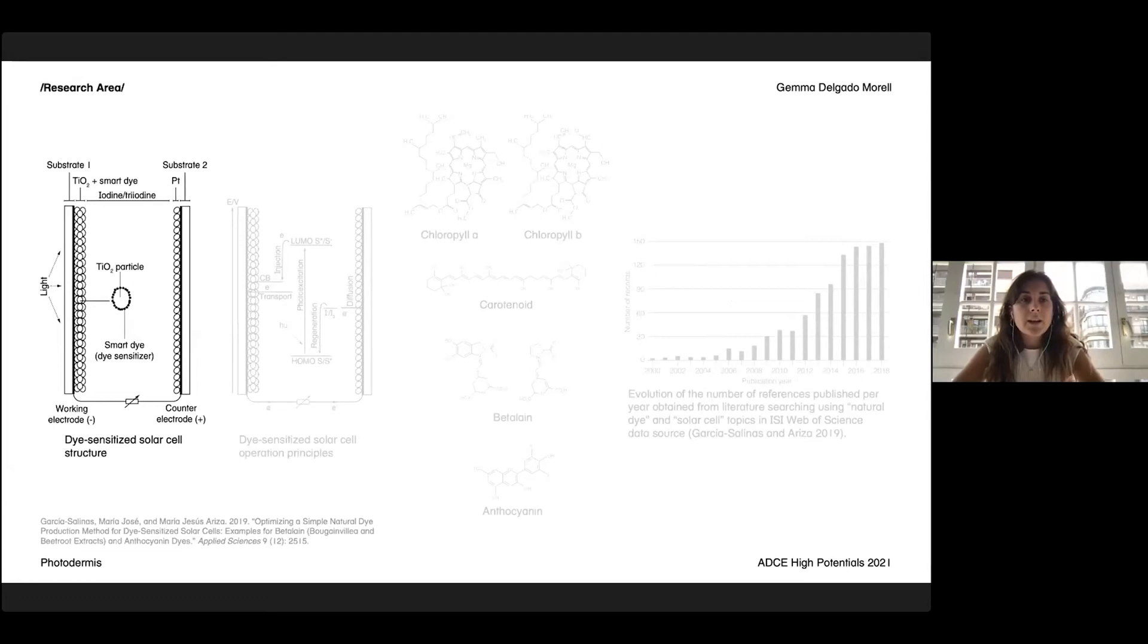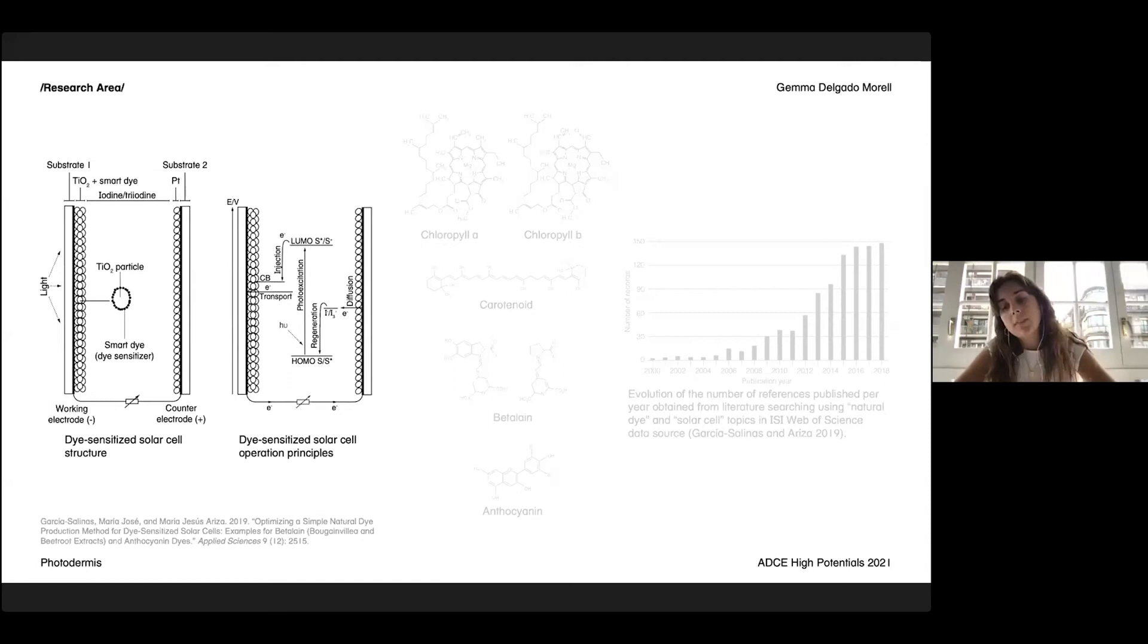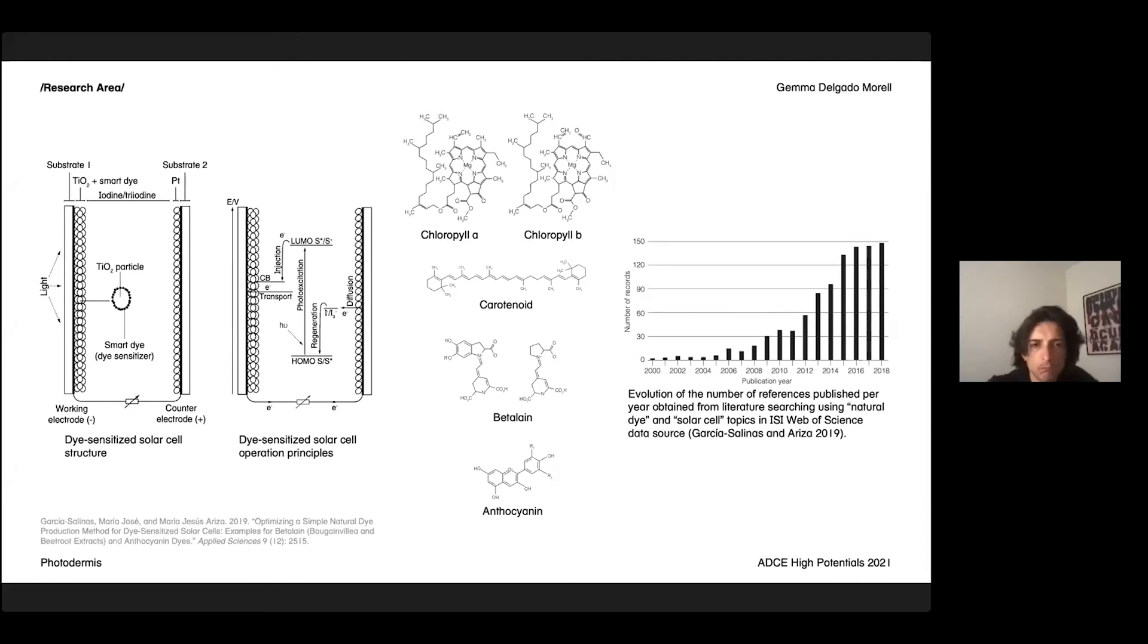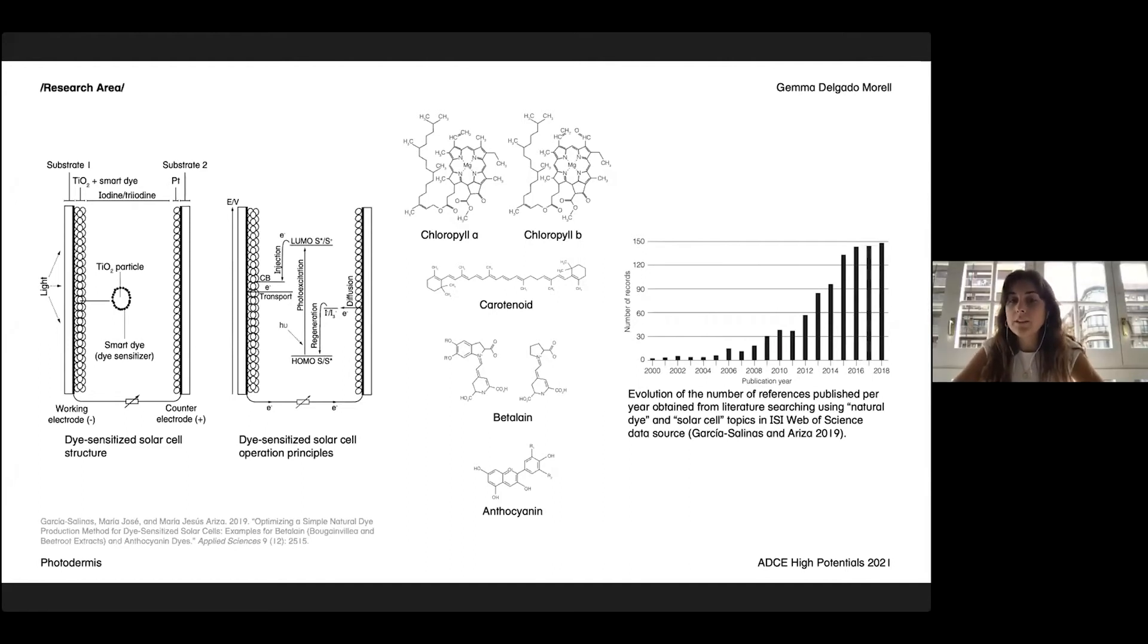I'm going to explain the process of the development of the project. It started with theoretical research about understanding these smart dyes, which are normally used in a type of solar cells to generate energy from light harvesting. This is the structure of these type of solar cells, which are called dye-sensitized solar cells, and also its functionality. These cells working with these type of dyes have the special fact that the dye can be made natural, which is normally happening in these areas of science. In fact, in the last 10 years, there have been an increasing number of publications about the use of natural dyes for these type of cells.